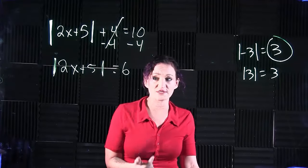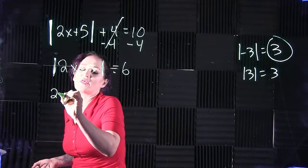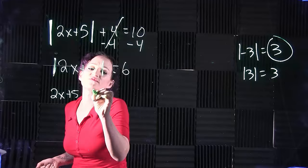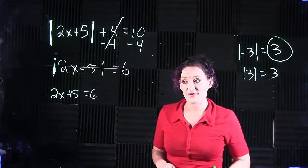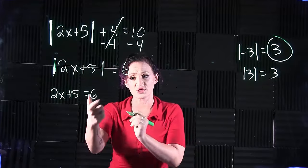We have the 2x plus 5 is equal to 6. So we're just going to rewrite that, ignoring the absolute value bars. You're going to create a second equation for the positive and the negative version. So this is our positive version is equal to 6.